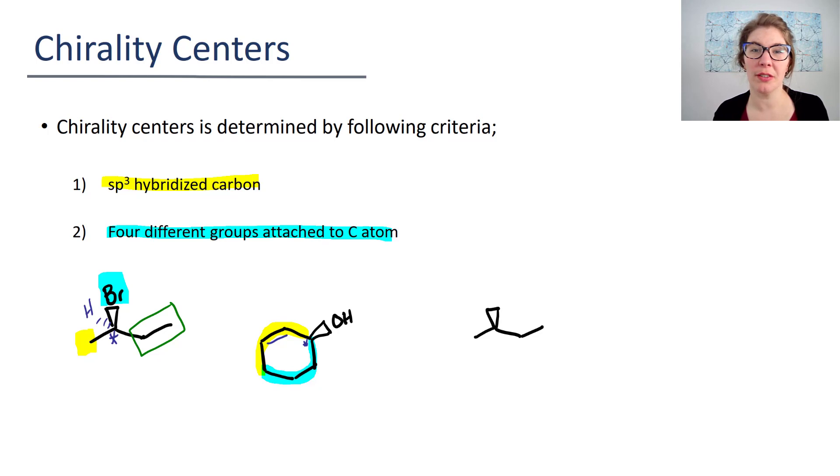This final one also gives people some trouble because what happens is once you start seeing these wedge and dash bonds, students are like, bam, that's a chirality center. I know because my teacher just put a wedge or dash bond there. Well, I mean, technically I could put a wedge or dash bond anywhere that is an sp3 hybridized carbon because that is trying to illustrate that you have 109.5 degree bond angle. It just really is very common that when there's a chirality center, there also is a wedge or a dash bond.